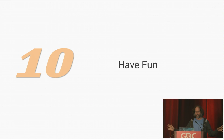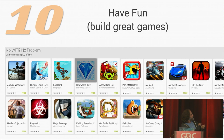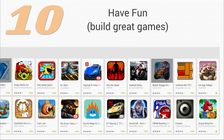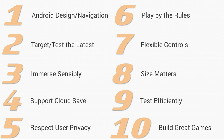Ten: have fun. Build great games. Here is an example of a featured list from a current Google Play session. If you take a look at these, they all have something in common — users love them. Ultimately, we want to promote games both we and our users love. So that's it: ten things that will help you build games that your users will love and that Google Play will want to feature.